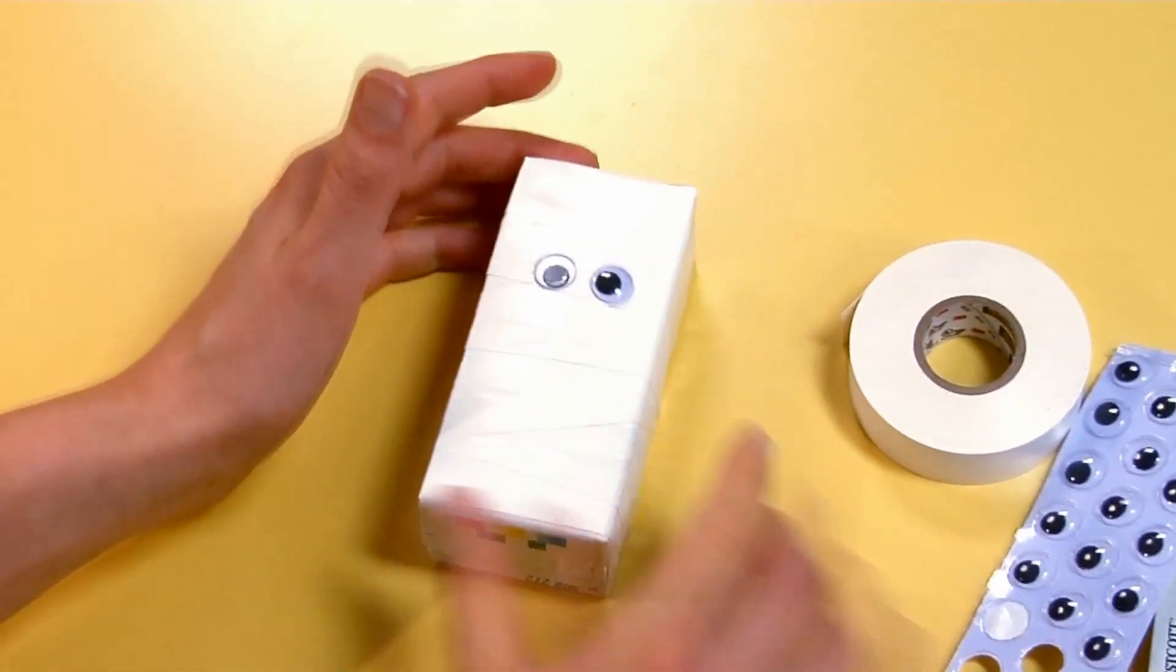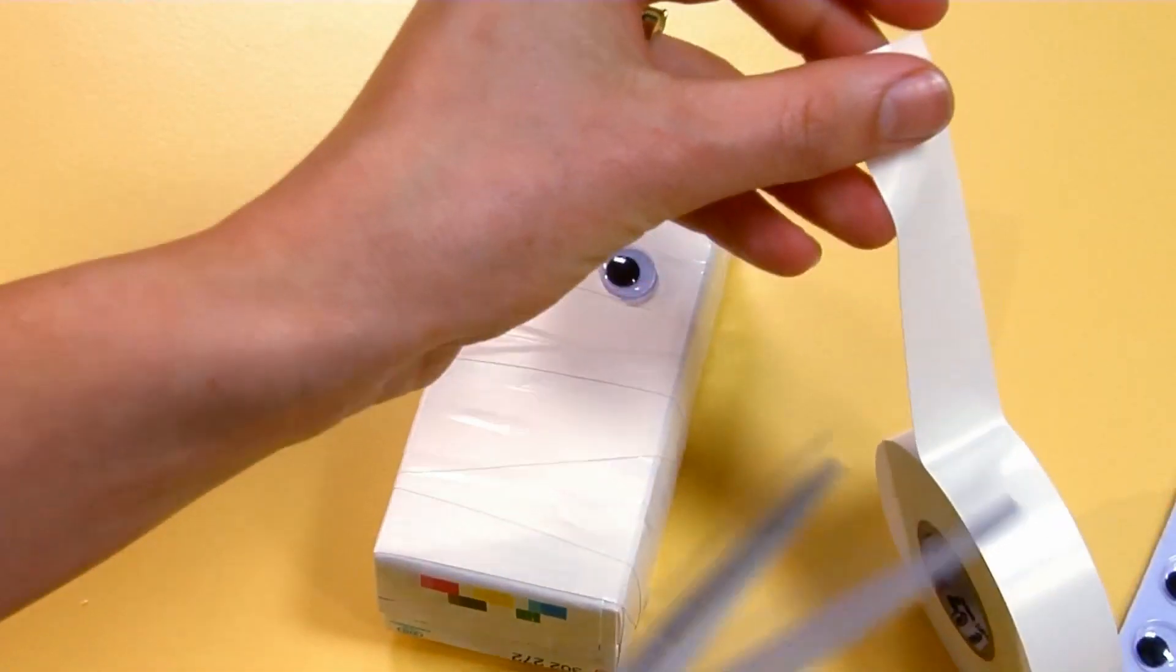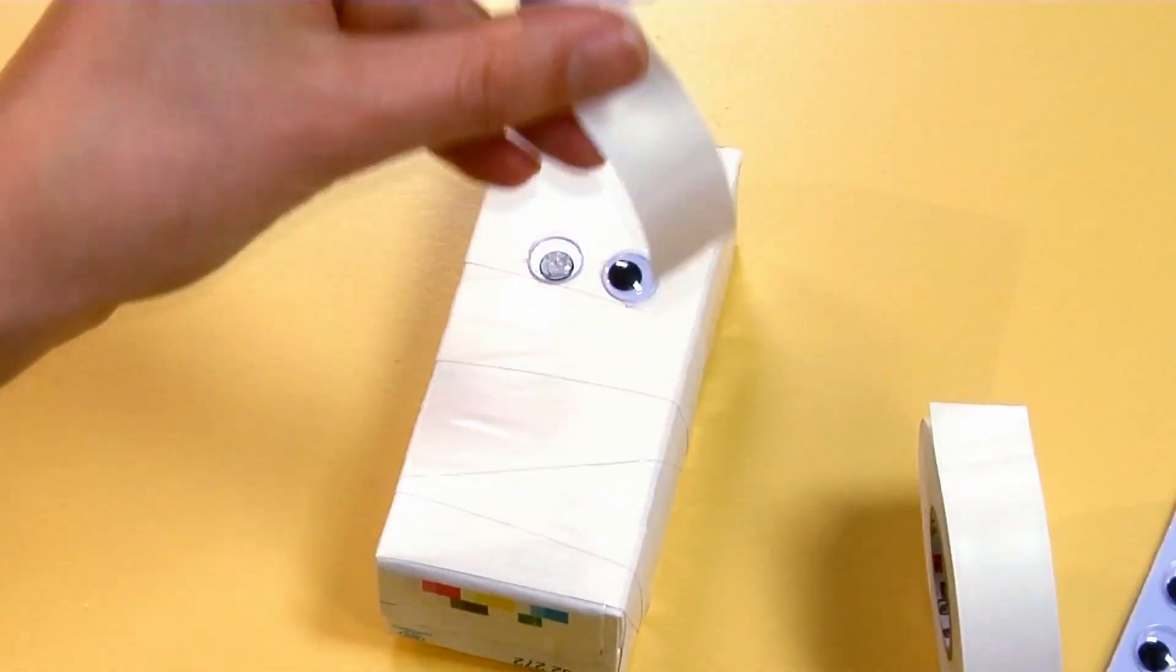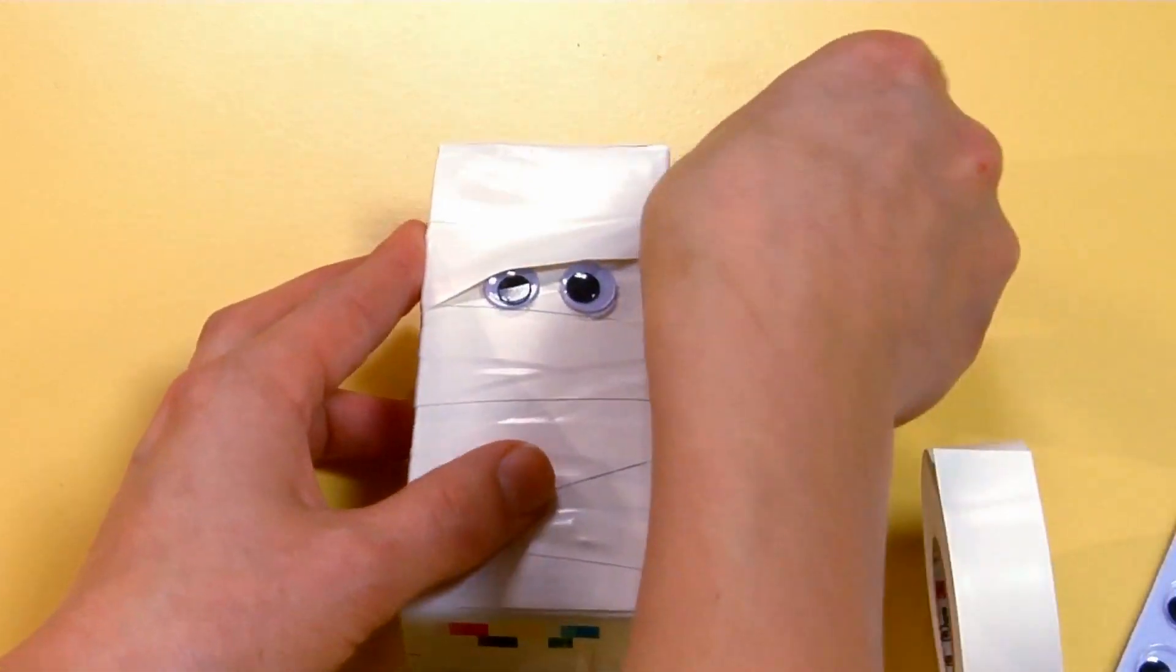Then we have to give him a brow. So take your tape and cut a three-inch strip, and the trick is to position it on an angle so he has a little character and personality.